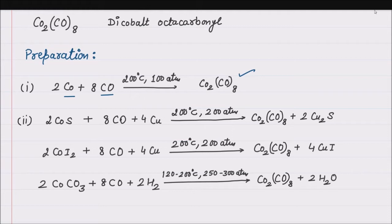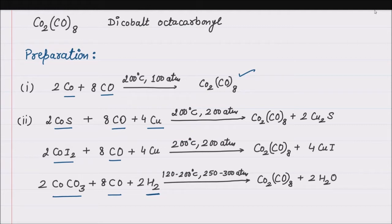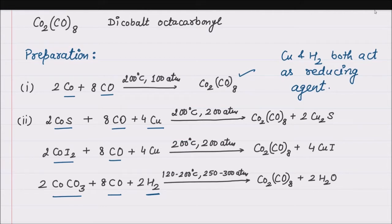It can also be prepared by carbonylating cobalt sulphide or cobalt iodide with carbon monoxide in the presence of copper metal, or by carbonylating cobalt carbonate with carbon monoxide in the presence of hydrogen gas. Copper and hydrogen both act as reducing agents. These are the methods of preparation of dicobalt octacarbonyl.